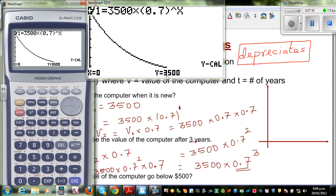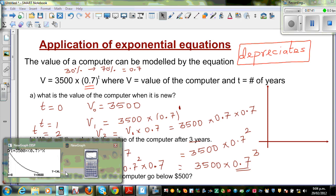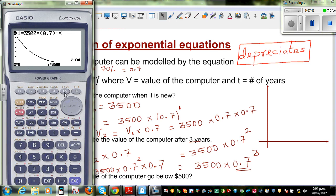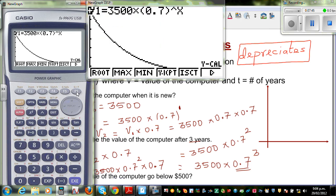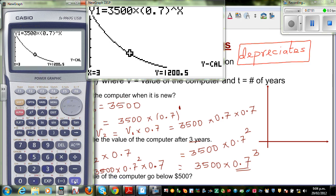So the second question was, what's the value after 3 years? So that would be, so again Gsol, Ycalc and type in 3 years. So that's 1,200.5. That's how you get this answer.